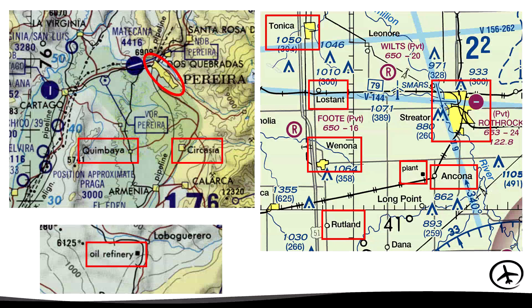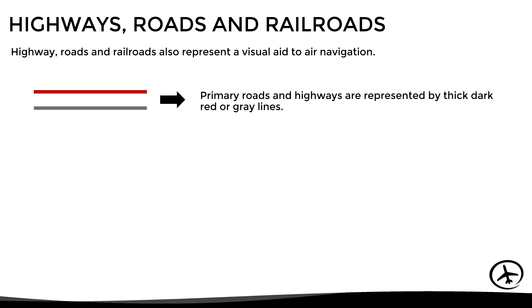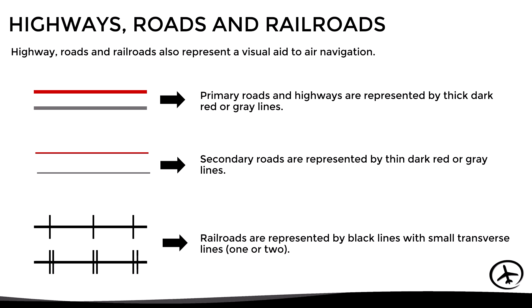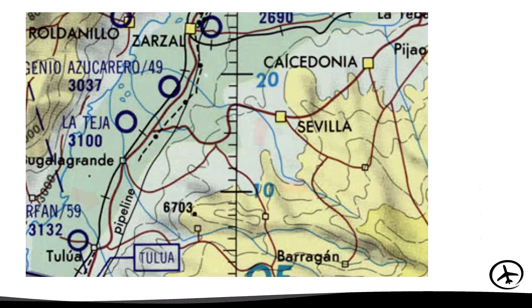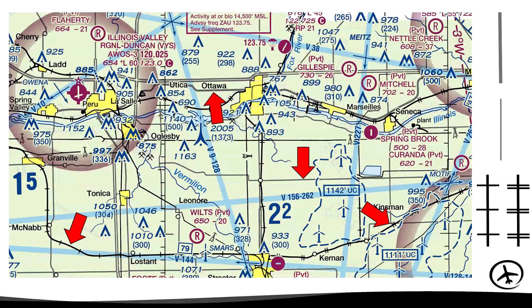Another important feature depicted on VFR charts are highways, roads, and railroads. Primary roads or highways are represented by thick dark red or gray lines depending on the type of chart, while secondary roads are represented by thin dark red or gray lines. Railroads are represented by black lines with small transverse lines — one or two depending on the number of tracks. For example, an operational navigation chart may use dark red for roads and show a single-track railroad, while a sectional chart uses gray for roads and can show both single and dual-track railroads.